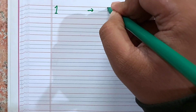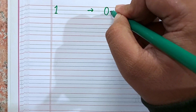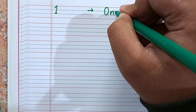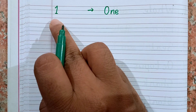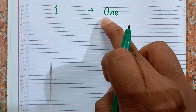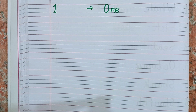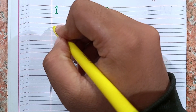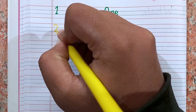This is 1. Now I will write the spelling of 1. Remember the spelling, kids: O-N-E. This is 1 and the spelling of 1 is O-N-E. Now I am going to write the next number after 1, that is 2.